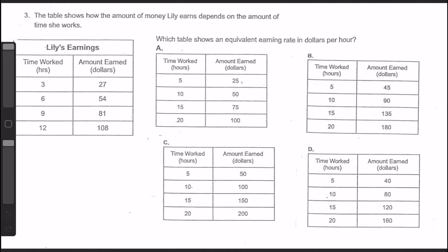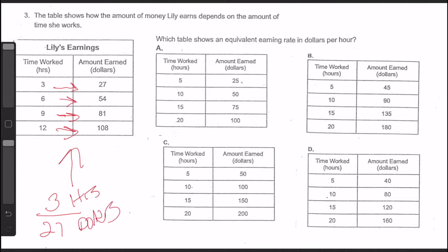Let's go to question three. The table shows the amount of money Lily earns depending on the amount of time she worked. We've got three hours for $27, six hours for $54, nine hours for $81, and 12 hours for $108. We need to figure out Lily's ratio. The first entry gives us three hours over $27. Three and 27 are both divisible by three, so to get the unit ratio — how many dollars Lily makes per one hour — I divide both by three. Three divided by three is one, and 27 divided by three is nine. For every one hour, Lily makes $9.